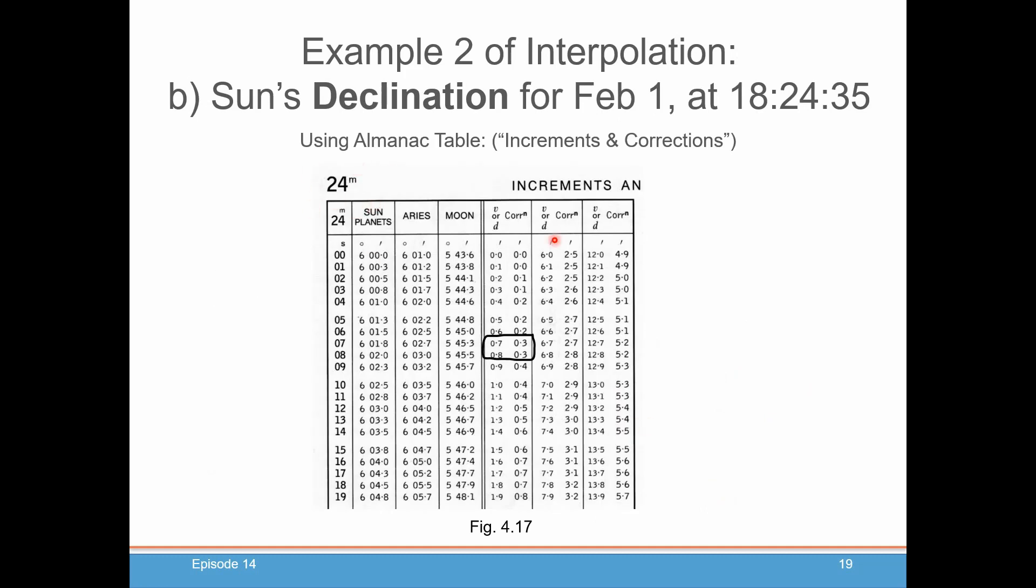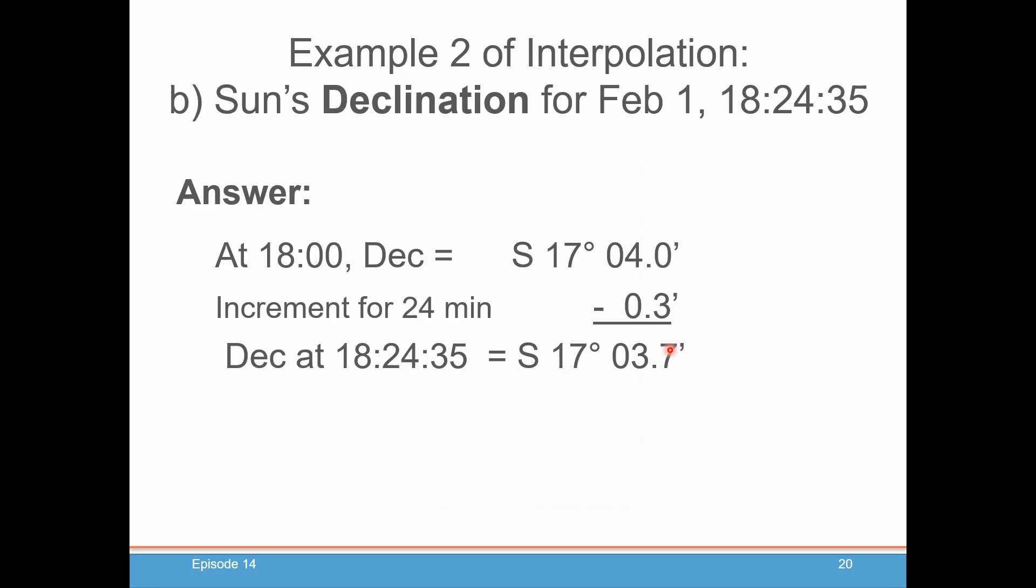Go back to that 24-minute table. We go to the D of 0.7. And we got a correction of 0.3. Oh, look. The correction if we had used 0.8 is also 0.3. Might as well just use the D at the bottom of the table. So, we do our arithmetic: south 17 degrees, 4.0 minutes. Remember it was going down, so we need to remember the minus sign, the 0.3 from the table. And we get that our declination at 18, 24, 35 is south 17 degrees, 3.7 minutes. Again, simple. Just pull a number out of the table, do a little arithmetic, and you're good to go.